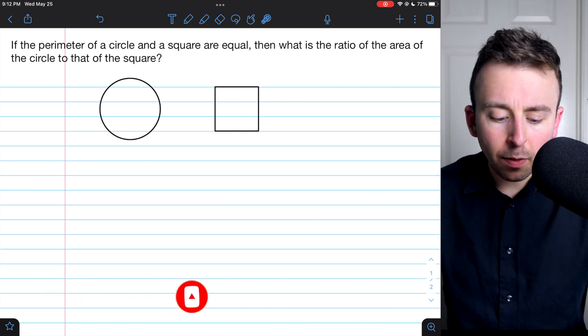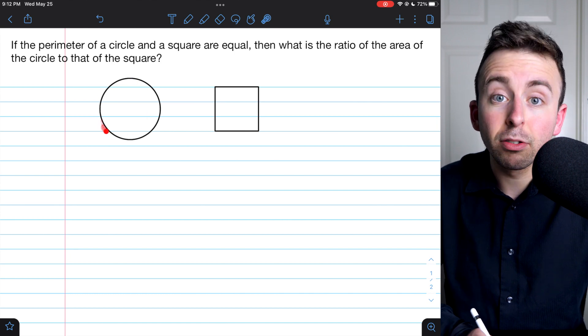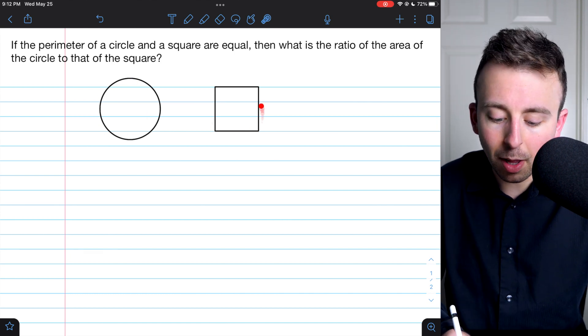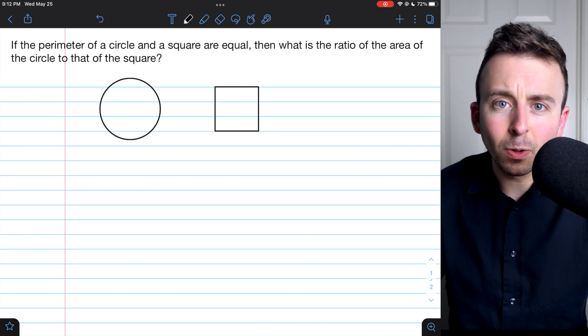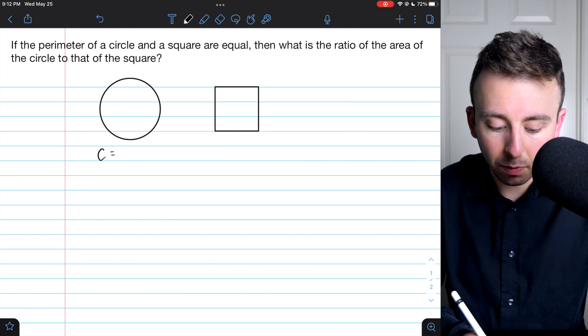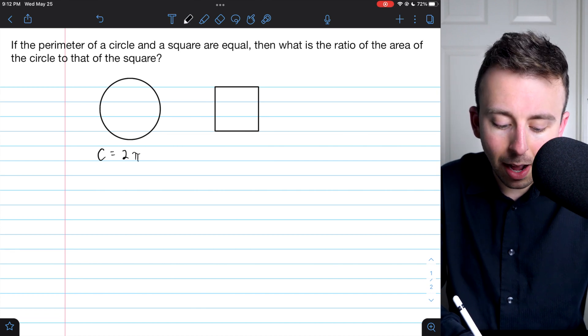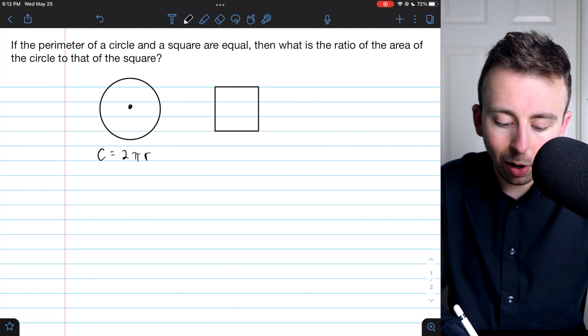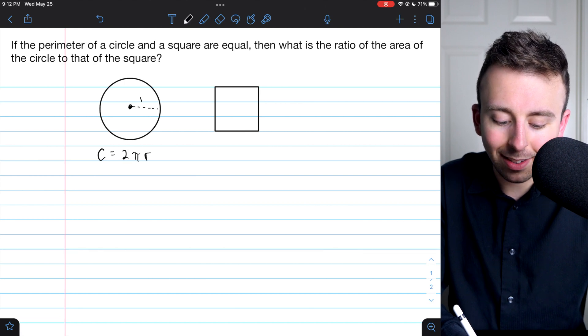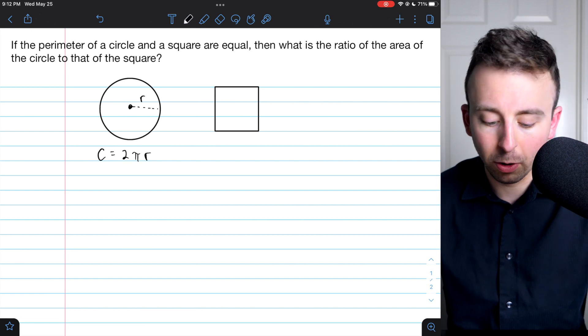Let's start off, since we know that the perimeter of the circle, by which we mean its circumference, is equal to the perimeter of the square, let's write what those things are. So we'll say C, the circumference of the circle, what is that? You might recall that is 2πr, where r is the radius, the distance from the center of the circle to the circle.